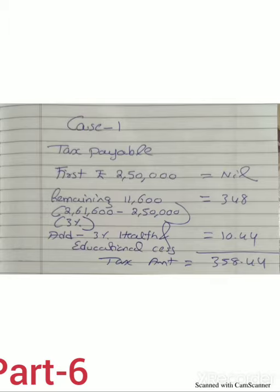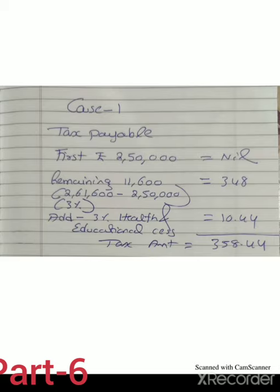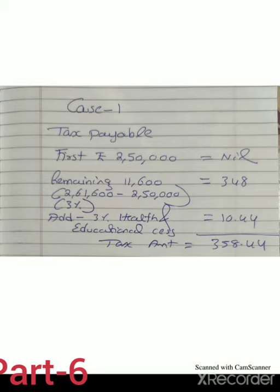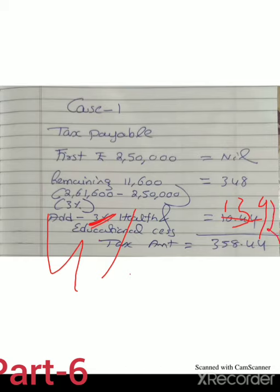Under Case 1, total taxable income is Rs. 2,61,600. Up to Rs. 2,50,000 the tax is nil. The remaining 11,600 is taxable at 5% (slab rate). Adding 4% health and education cess of Rs. 13.92, total tax payable under Case 1 is Rs. 348 plus Rs. 13.92.